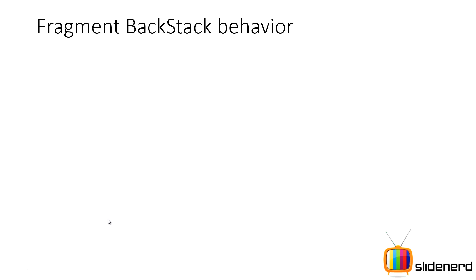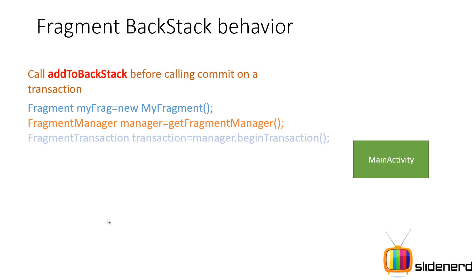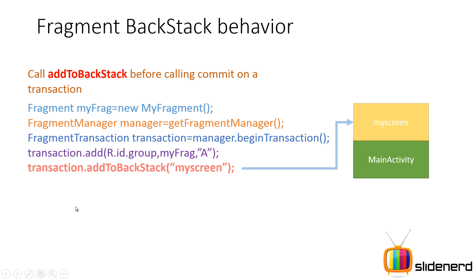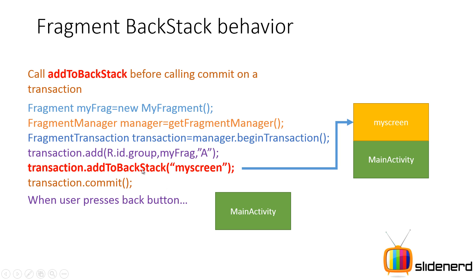Whenever you are performing a transaction — and remember, fragments are added by transactions — call the method addToBackStack to add this entry to the backstack. You get the manager, begin the transaction, add the item, and then call transaction.addToBackStack("myScreen"). This means that operation is also considered as part of something that changes the backstack. It is very important that you call addToBackStack before you commit the transaction. When the user presses the back button, whatever fragment was added is undone and the user is taken back to the main activity.